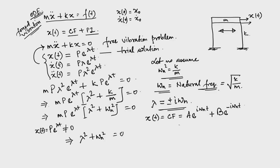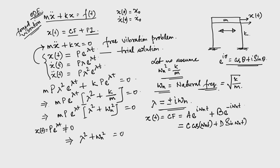Once we find λ, we write x_cf = A·e^(iω_n·t) + B·e^(-iω_n·t). Recalling that e^(iθ) = cos θ + i·sin θ, we can simplify this expression. The complementary function becomes x(t) = C·cos(ω_n·t) + D·sin(ω_n·t). This is the response of the SDOF system when there is no forcing function. Vibration occurs because of the applied initial conditions.